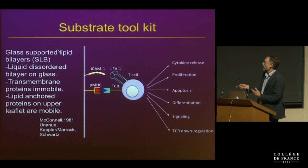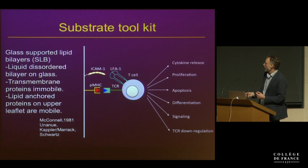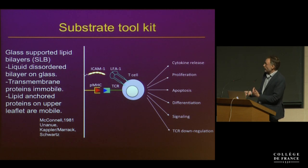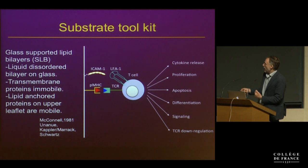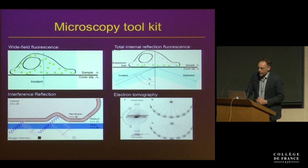The substrate we use is referred to as a supported lipid bilayer — essentially a phospholipid bilayer on a glass substrate, generated in our case usually by fusion of liposomes. This technology was originally developed in Harden McConnell's lab at Stanford and was first used to look at some aspects of the biophysics of Fc receptor triggering, then picked up more widely in immunology in the mid-1980s to demonstrate that purified MHC-peptide complexes could activate T cells. We learned about it in Tim Springer's lab, used it to reconstitute adhesion systems, and then ten years later at WashU used it to reconstitute the immunological synapse by combining adhesion molecules with MHC-peptide complexes.